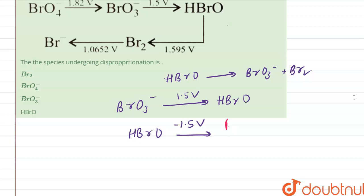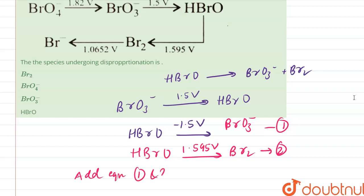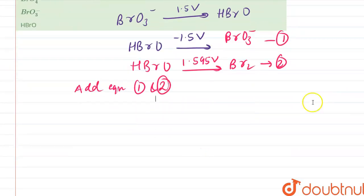Right, this is equation number one. The equation number two is HBrO with 1.595 volt formed Br2. Right, add equation one and two. All right, so we will get...